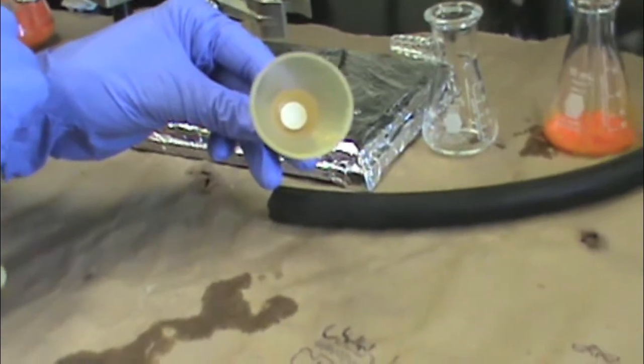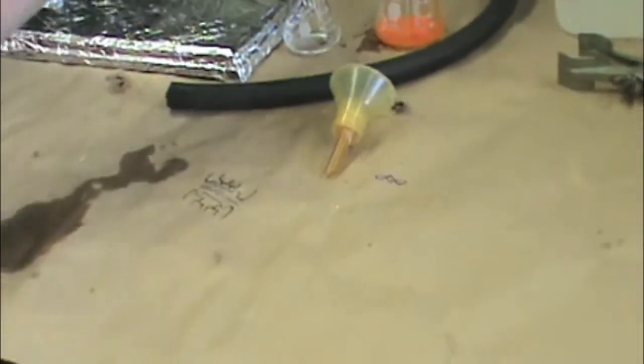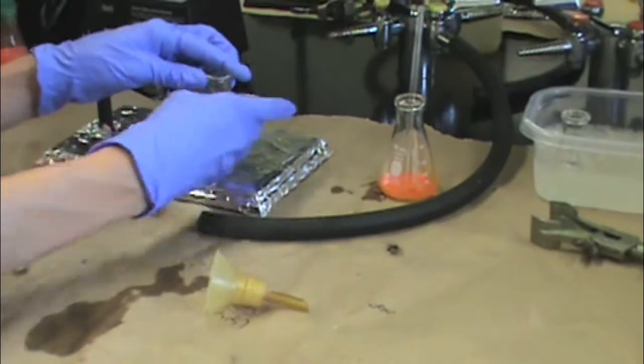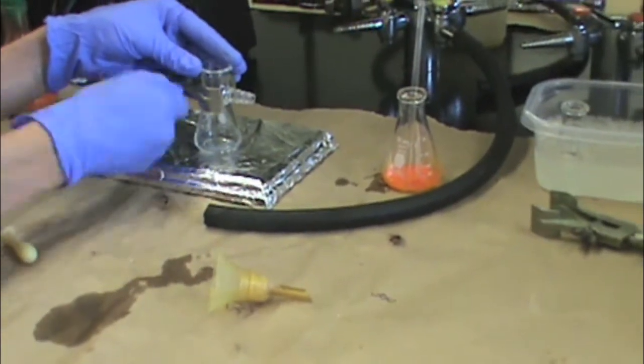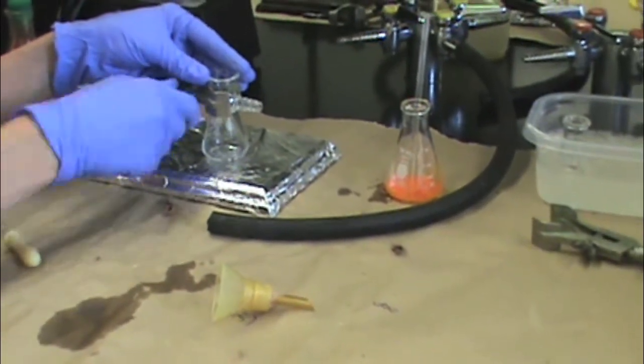You won't need any paper for this filtration. You are going to clamp your sidearm flask, making sure that it is tight and won't fall over.